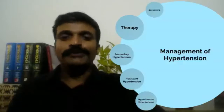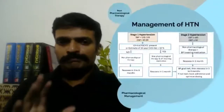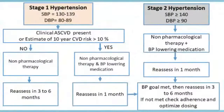Now how do you decide on therapy? Please look at this table very carefully. On the right side of the screen you have Stage 2 hypertension, and on the left side you have Stage 1 hypertension. Stage 1 is defined as systolic BP between 130 to 140 and diastolic BP between 80 to 90. Stage 2 hypertension is systolic more than 140 or diastolic blood pressure of more than 90.